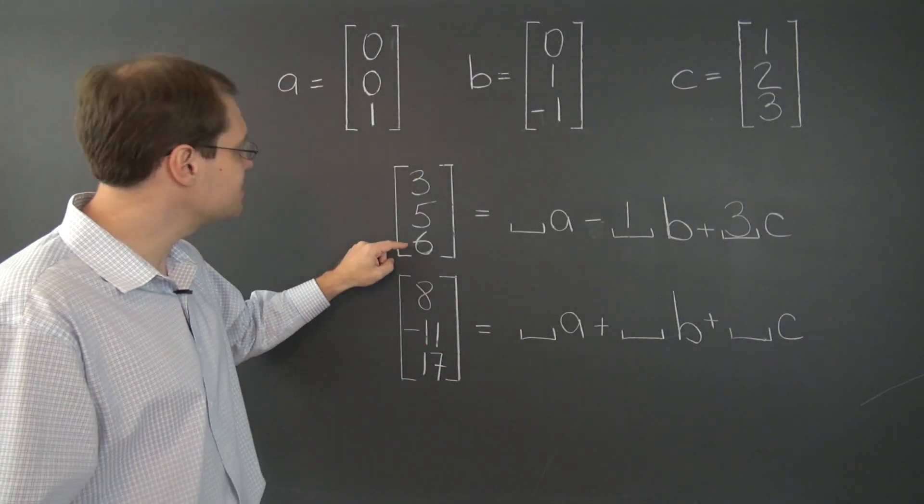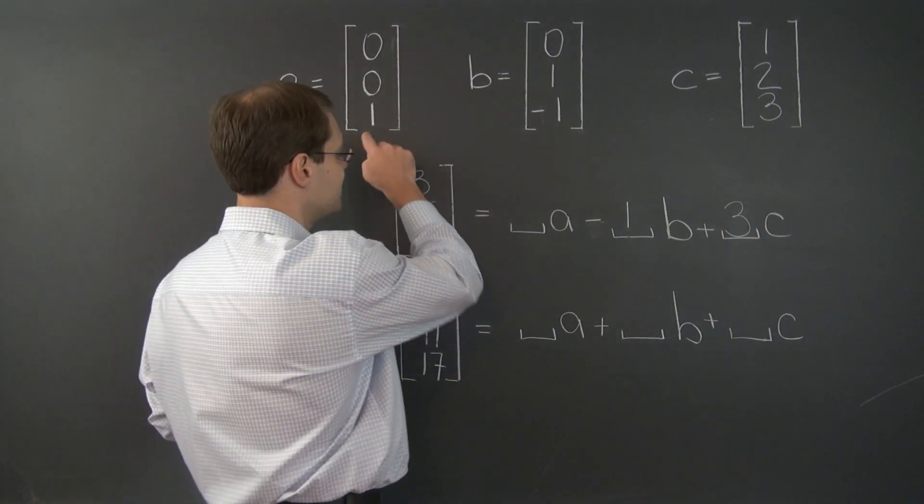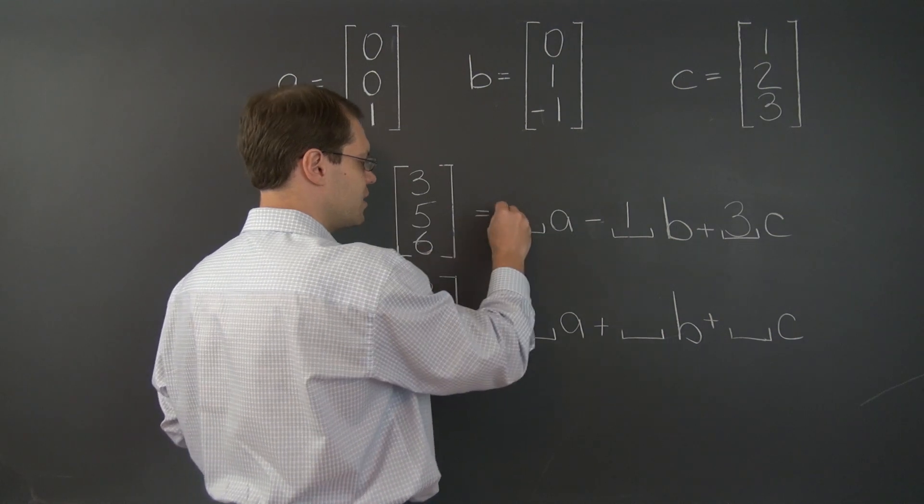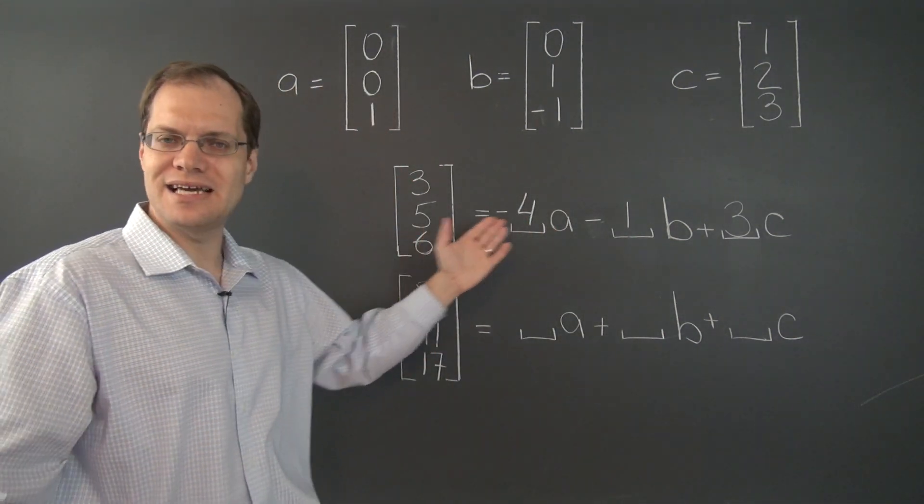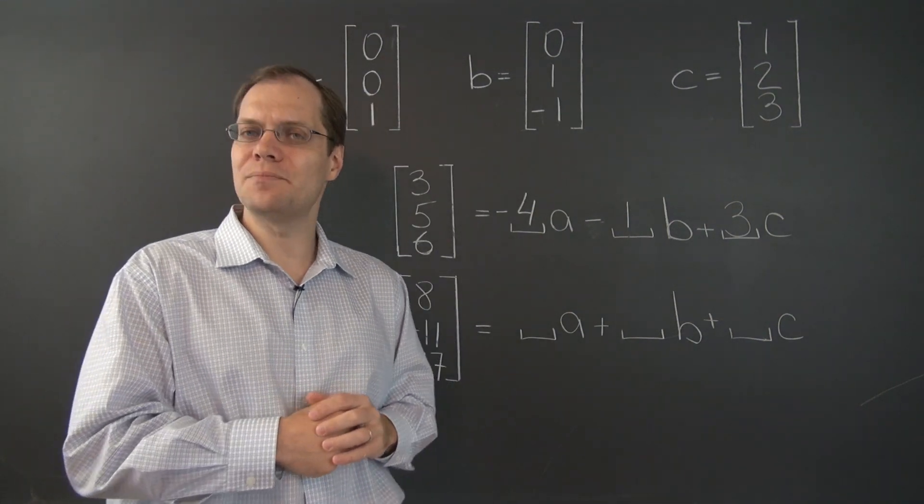And we have to get from ten to six. So we must take, because this entry right here is one, minus four of A. And the decomposition problem is complete.